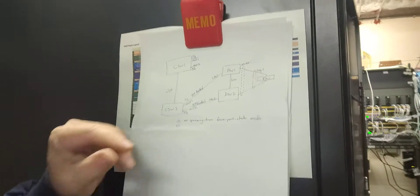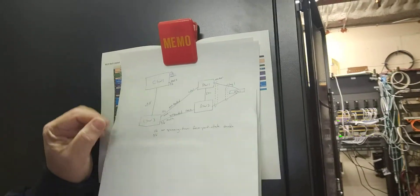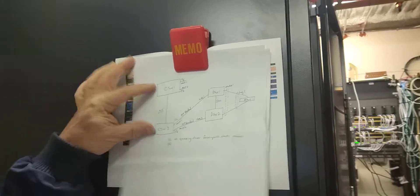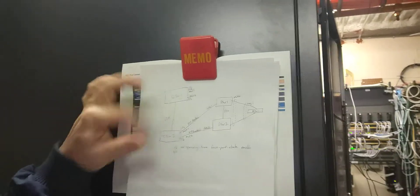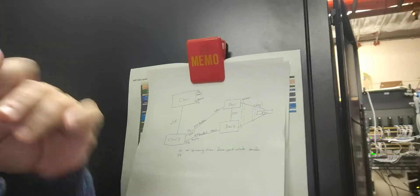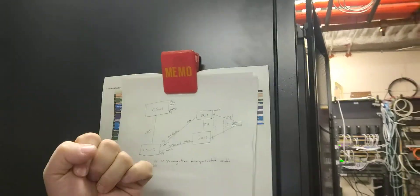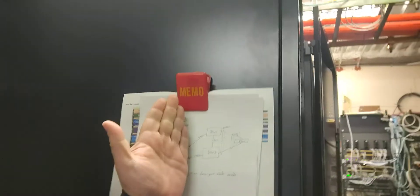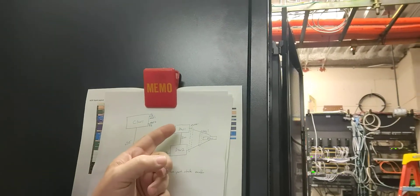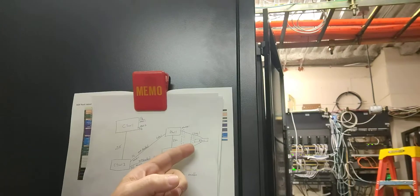So what was the issue? Glad you asked. Just a brief recap — this is how it was. I just drew it up real quick. We have my two core switches right here — that's it, it's Extreme Fabric. And then we have these two distribution switches right here.